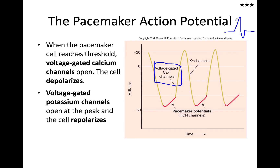Thinking back to the neuron action potential: the rising phase was due to the influx of sodium through voltage-gated sodium channels. Those have two gates and they inactivate at the peak, then voltage-gated potassium channels open and potassium leaves the cell — efflux. So: influx of sodium, efflux of potassium — that gives us the action potential for the neuron.